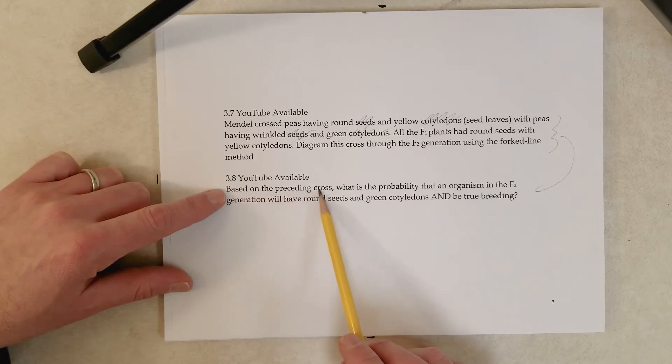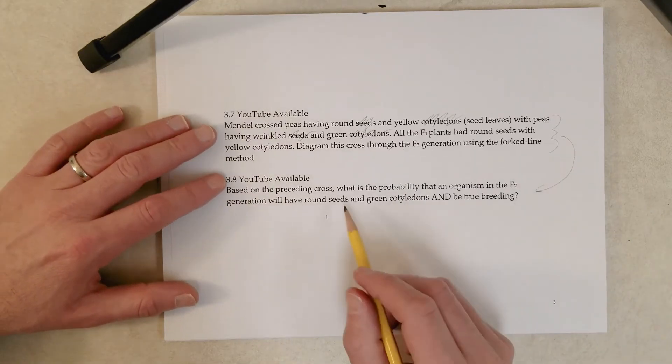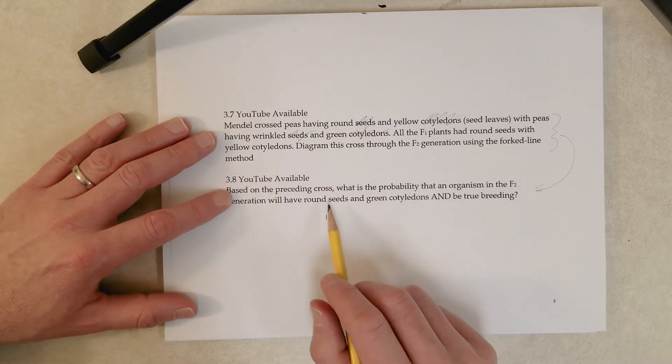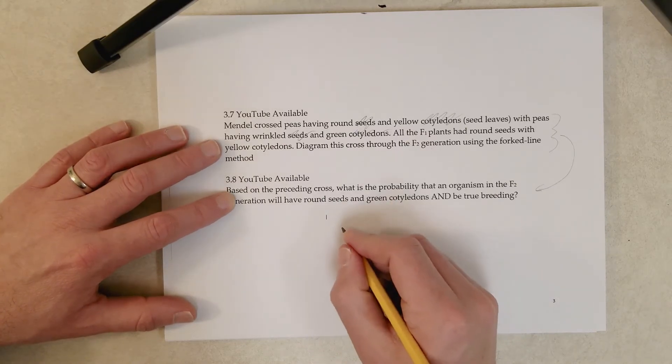So this question right here, based on the preceding cross, what is the probability that an organism in the F2 generation will have round seeds and green cotyledons and be true breeding? Okay, so what types of genotypes, or what genotypes can have round seeds and green cotyledons?